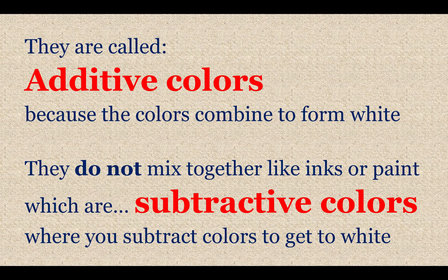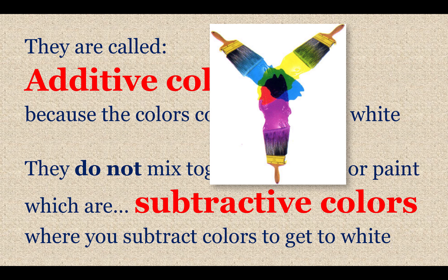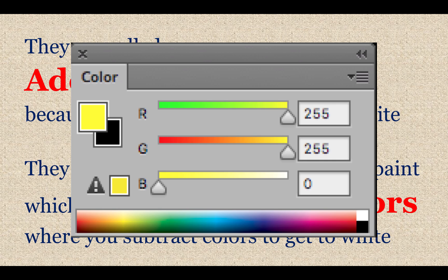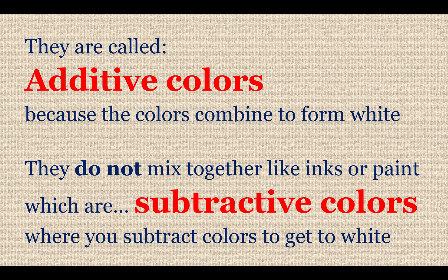One thing to keep in mind is that these are additive colors. RGB colors are additive — when they all combine together, they form white. Whereas with subtractive colors — like inks, paint, or crayons — when you subtract them you get the white of the paper. With additive colors you add them to get white, which is unusual. For example, red and green makes yellow, which wouldn't happen with paint. So just be aware that they are additive colors.